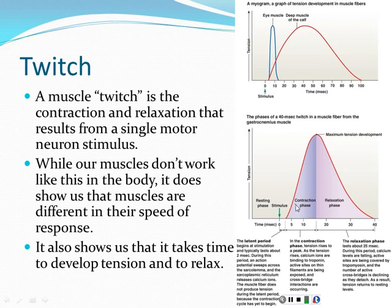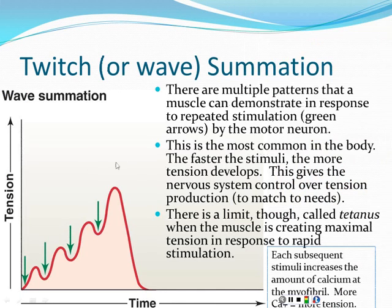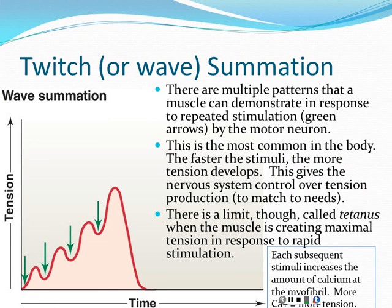The twitch is something we demonstrate in the laboratory; it's not really how muscles work in the body, because the nervous system never just sends one signal. We use it with isolated muscle cells to compare differences. In the body, we see multiple stimulations. One of the ways the nervous system transmits information is by signal rate — the faster a neuron fires, that can mean a greater intended effect, which is what we see in muscle.